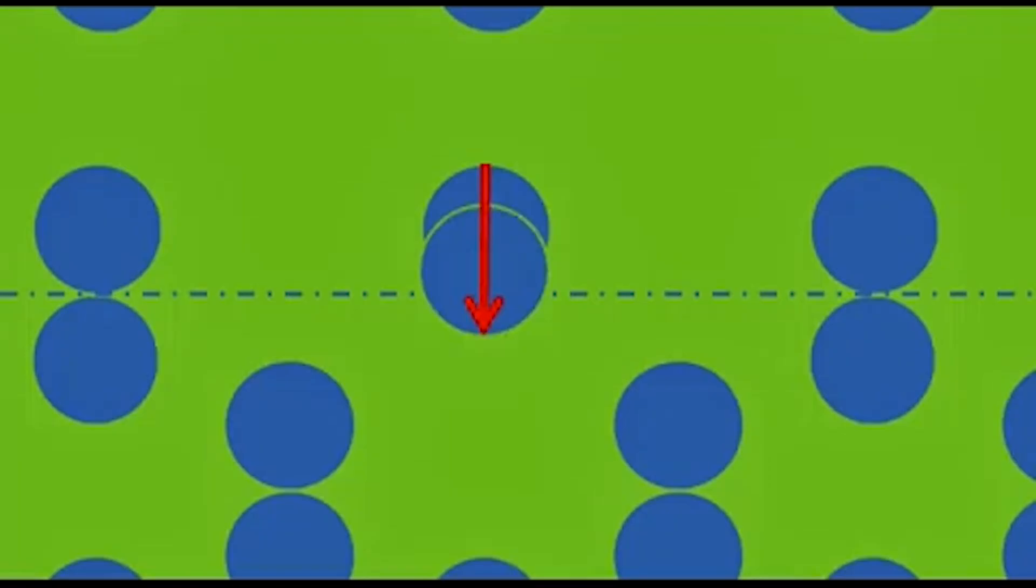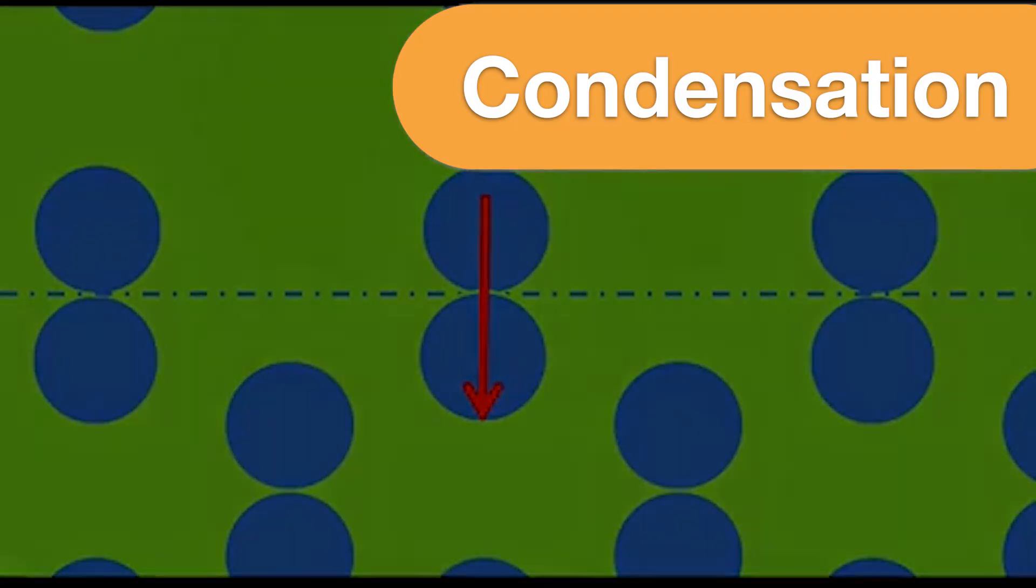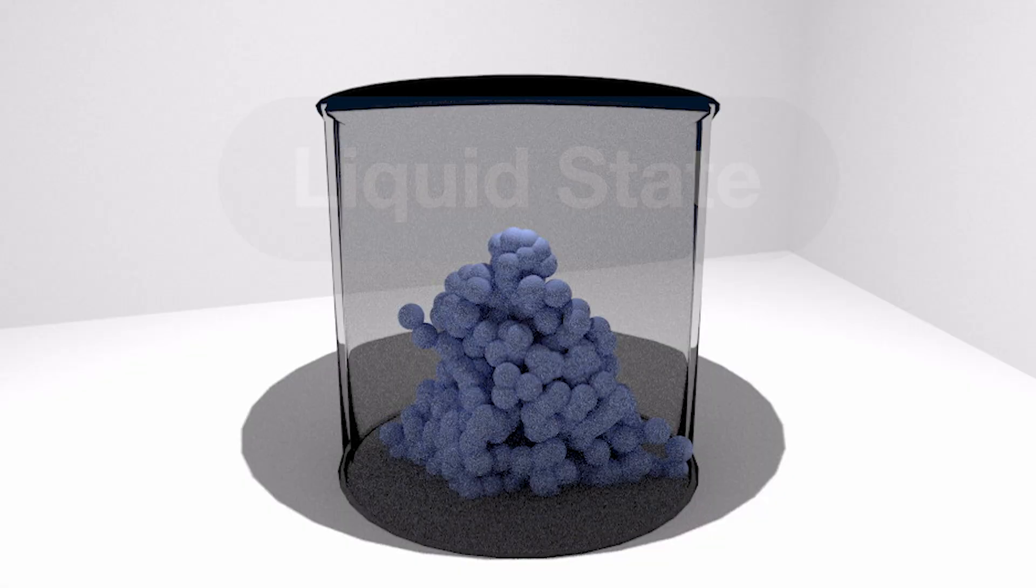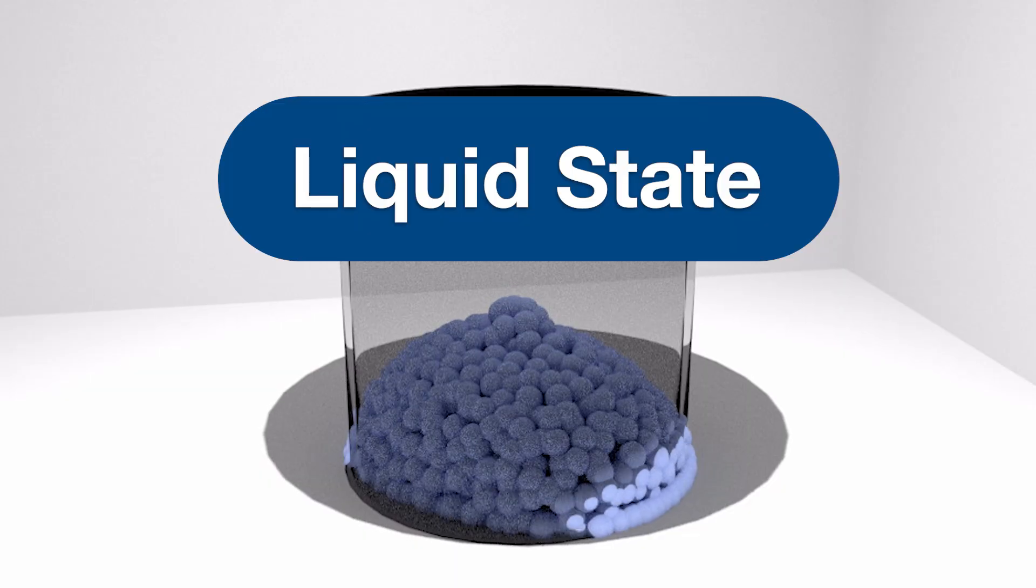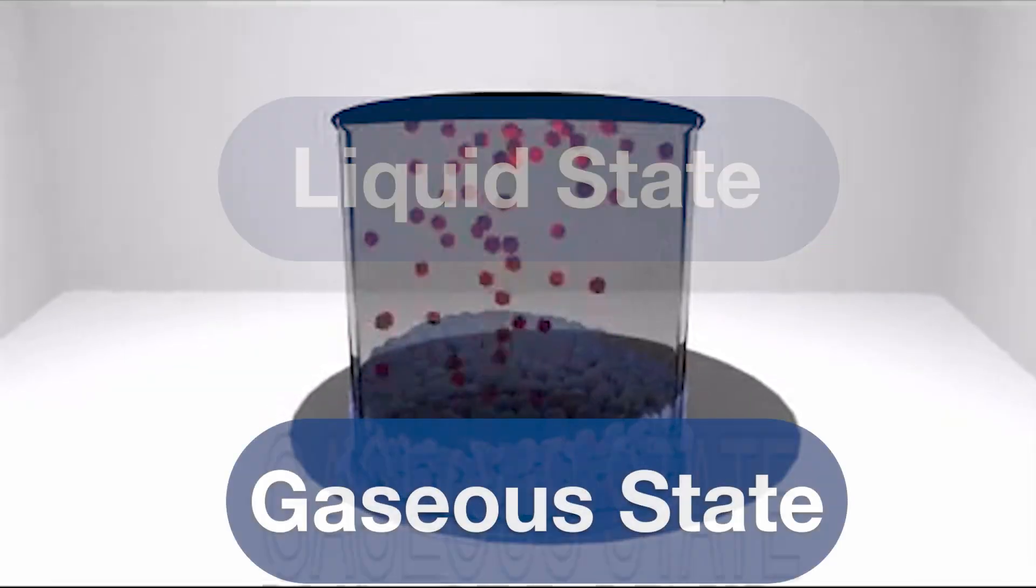Should the energy state of the vapor side demand more collisions at the liquid surface than the liquid molecules can provide, then those vapor molecules transition to liquid phase. This transition is referred to as condensation. Understanding the equilibrium energy state where molecules tend to change phase is critical to understanding cryogenic fluid behavior.